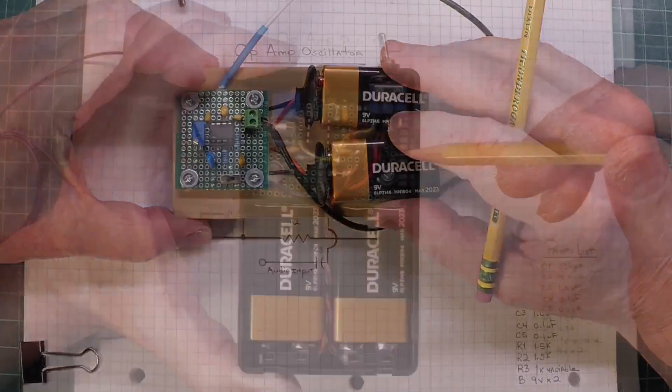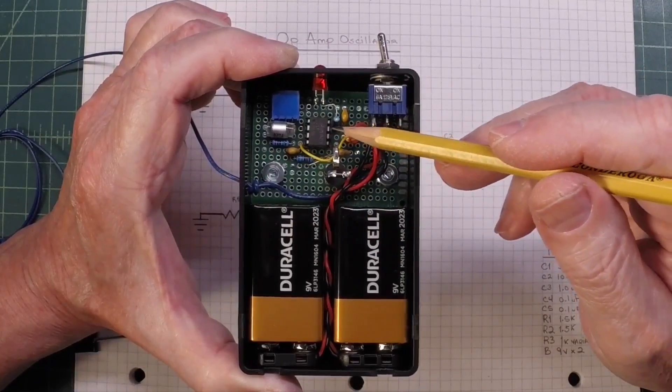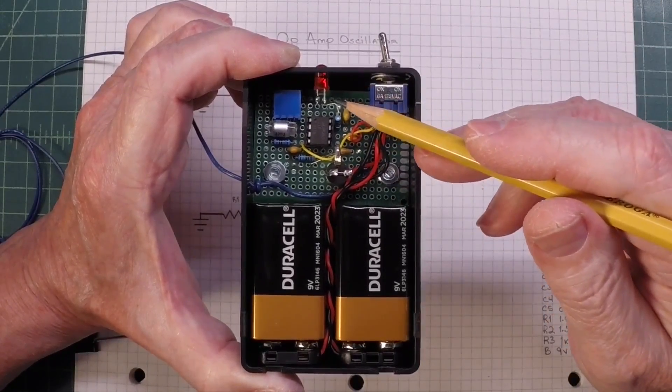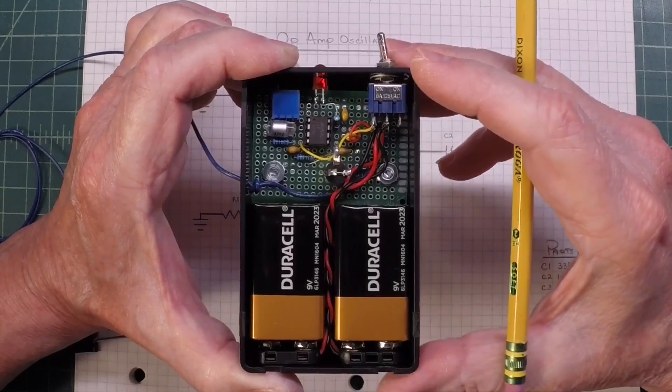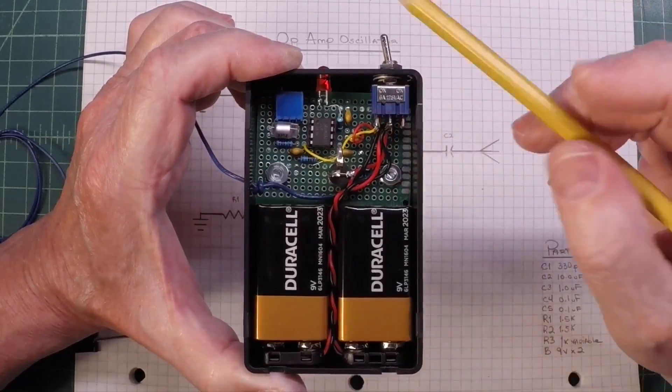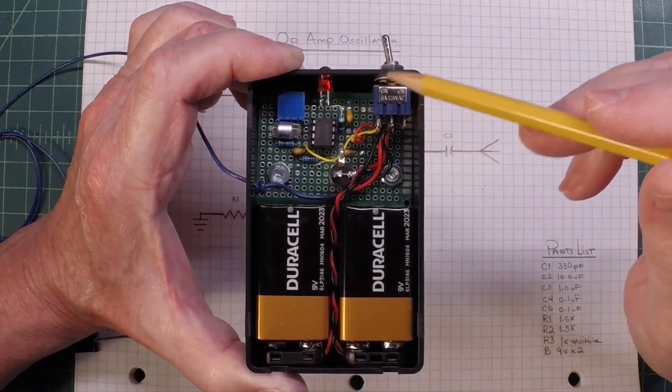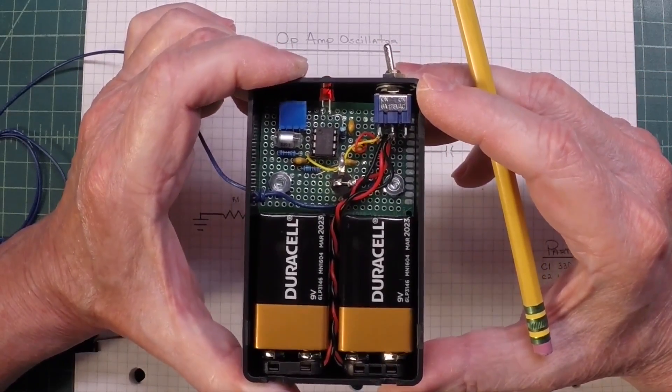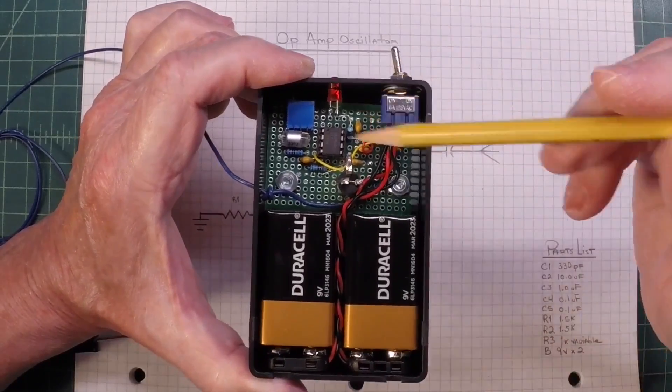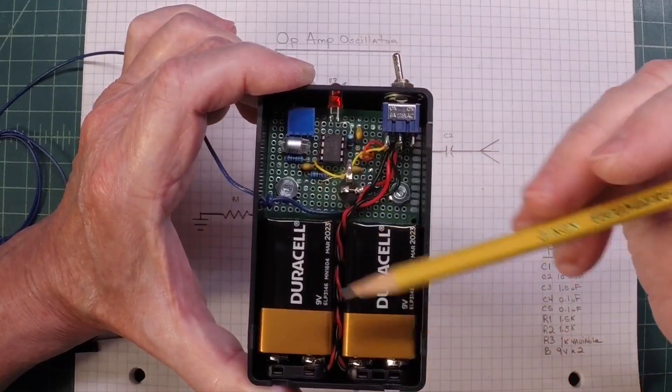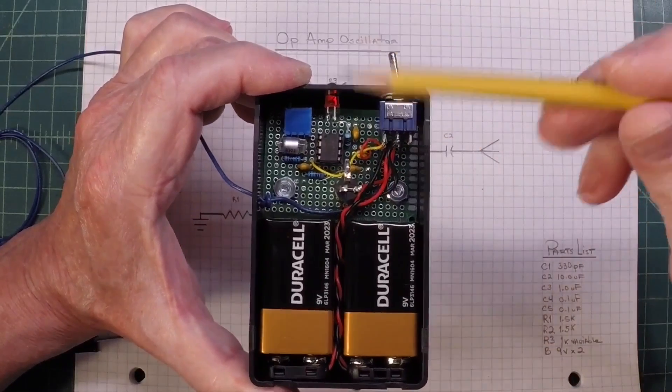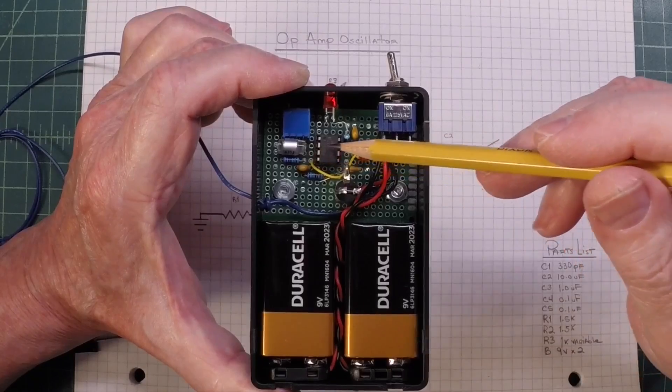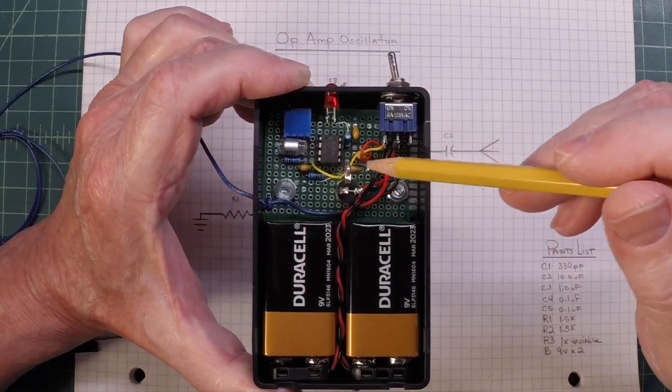All right, here's a closer look at the relaxation oscillator that I built. A few modifications from the original design that I just showed you, adding a switch, threw in an LED for an indicator. I think the first time I built it I left the unit on for I don't know, two or three days and ended up having to replace the batteries. So I apologize in advance, I don't have any drawings or anything to indicate the parts layout.